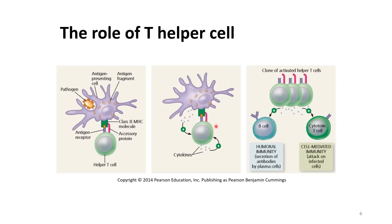Once activated, the T helper cells undergo multiple cell divisions, forming a clone of activated T helper cells. These activated T helper cells then help stimulate T cytotoxic cells in cell-mediated immunity and B cells in antibody-mediated immunity, which will be discussed later in this chapter.